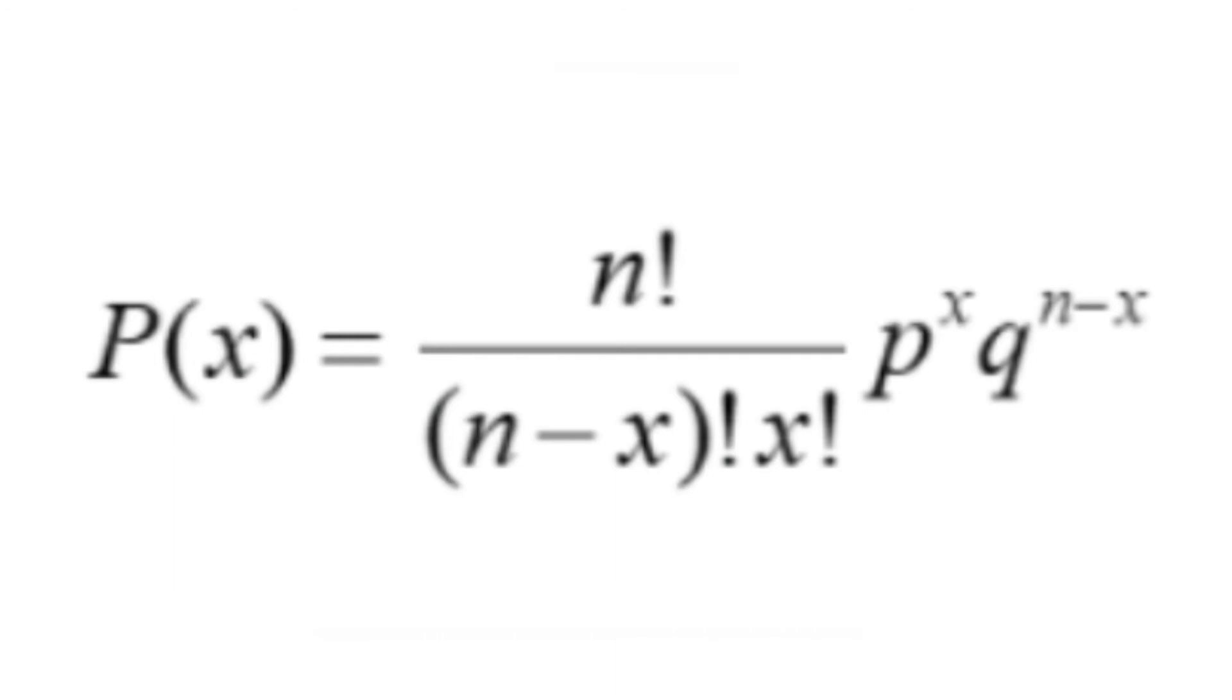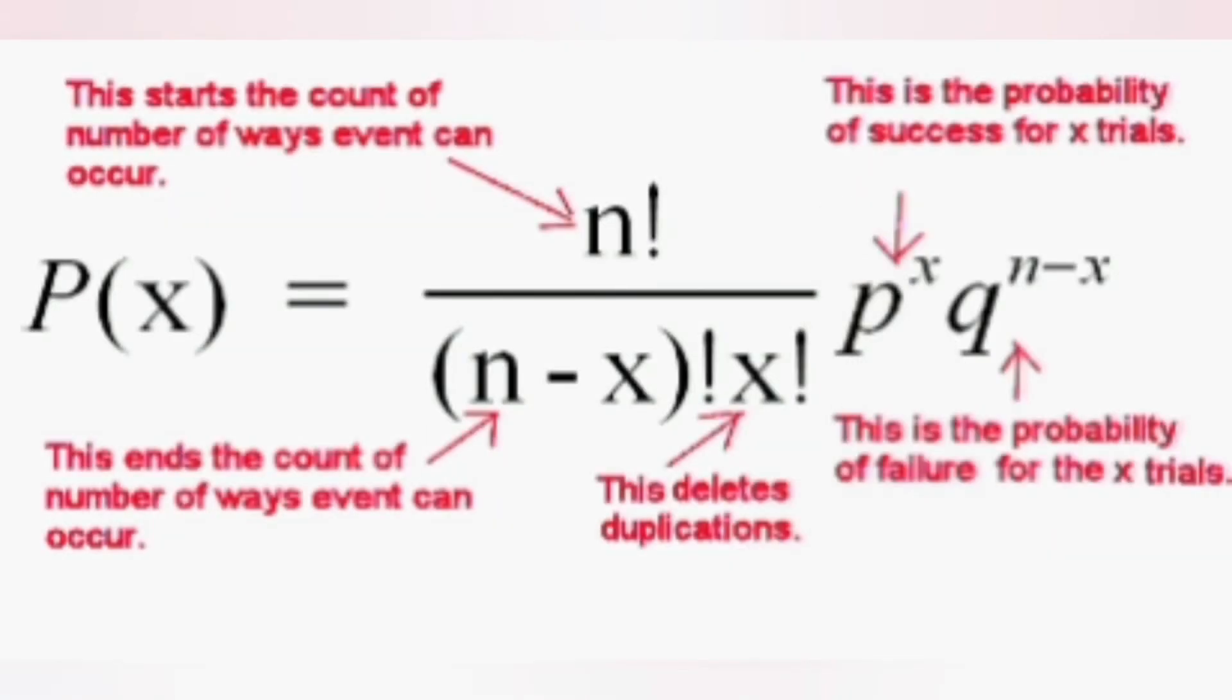In this form, each letter has a role. The n factorial is the starting count of a number of ways an event can occur. The x factorial deletes duplications. The lowercase p to the power of x is the probability of success for x trials. The lowercase q, which can also be written as 1 subtracted by p in brackets to the power of n subtracted by x, is the probability of failure for the x trials. As what I've said can be hard to understand, here's a visual image that depicts exactly what I've said.